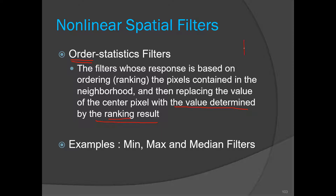If you consider a mask of three by three size, we will find the ordering of the nine pixels in that mask, and then replace the value of the center pixel by the value determined by the ranking result. We have to decide by which value we want to replace, and based on that we have three types of order filters: min filter, max filter, and median filter.